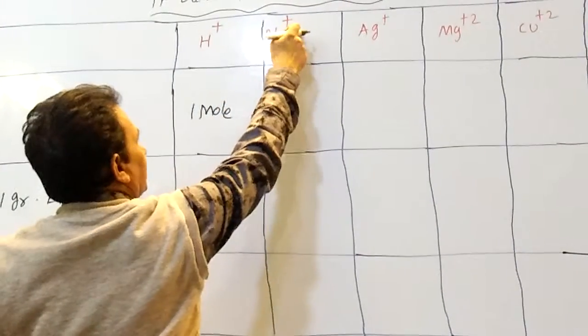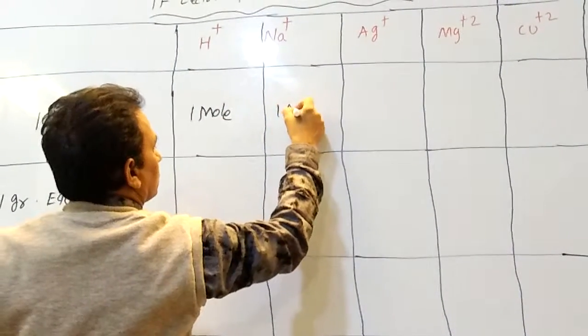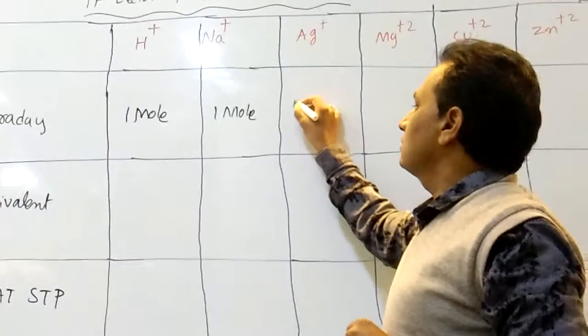Here, what is the charge? Plus one, that's why one mole. How many moles are deposited? Here also, only plus one, one mole.